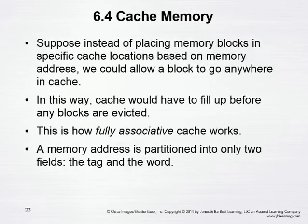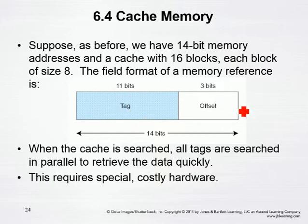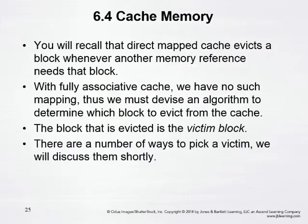So that's fully associative cache. Because we are not having to keep track of the block — since it's not a specific block and that mathematical relationship between the memory block and the cache block doesn't exist — we have more bits left for a tag, and then we have the offset. So having the tag have more bits allows us more flexibility in how we handle that memory. When we evict a block, it's called a victim block, and we'll talk about different ways of choosing which block gets evicted.